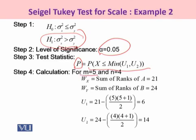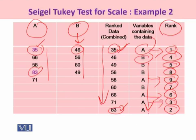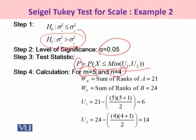For machine A there are 5 observations, and for machine B there are 4 observations. The rank sum for machine A, denoted W_x, is calculated by adding ranks: 1 + 9 = 10, then + 6 = 16, then + 3 = 19, then + 2 = 21. So the sum of ranks for A is 21. Similarly, the sum of ranks for machine B is 24.